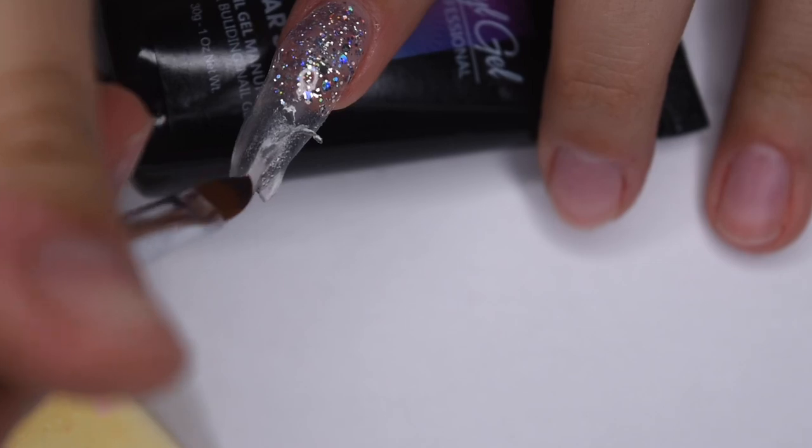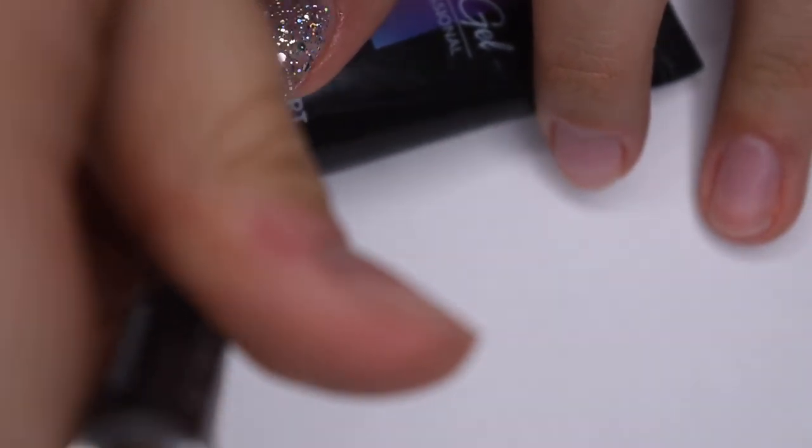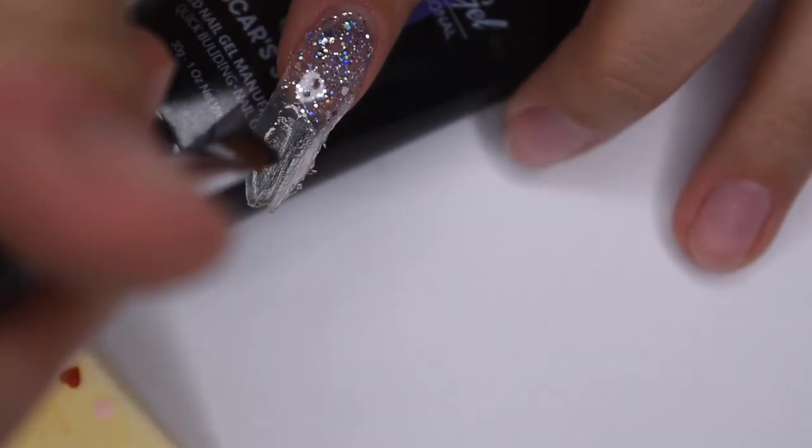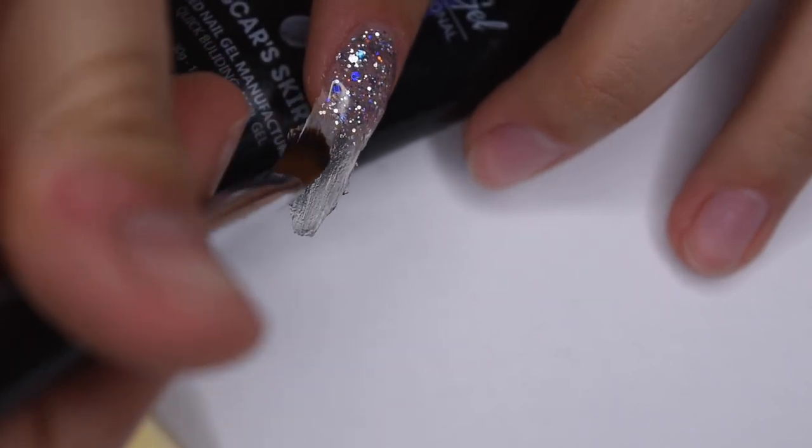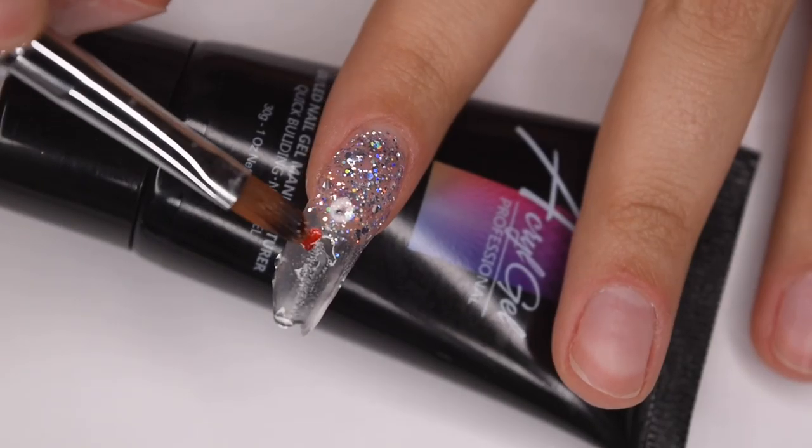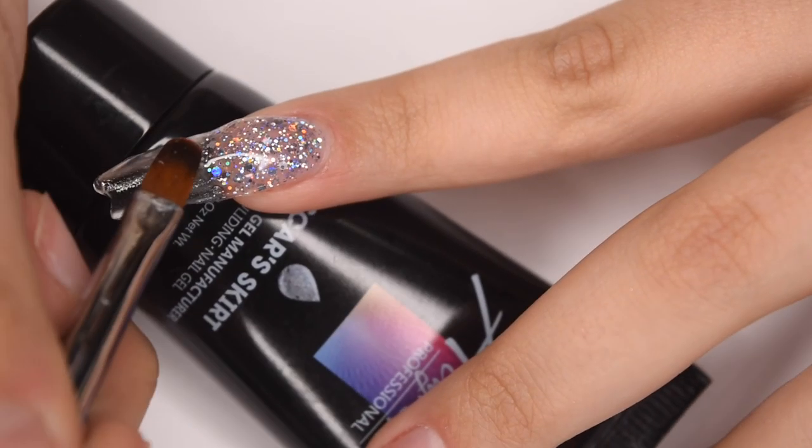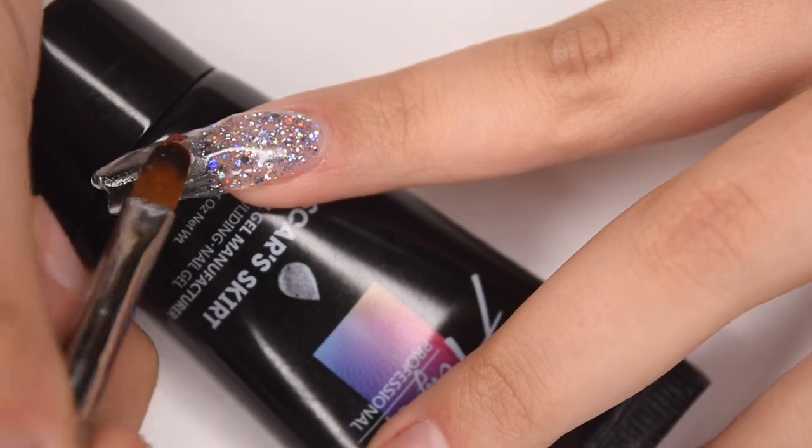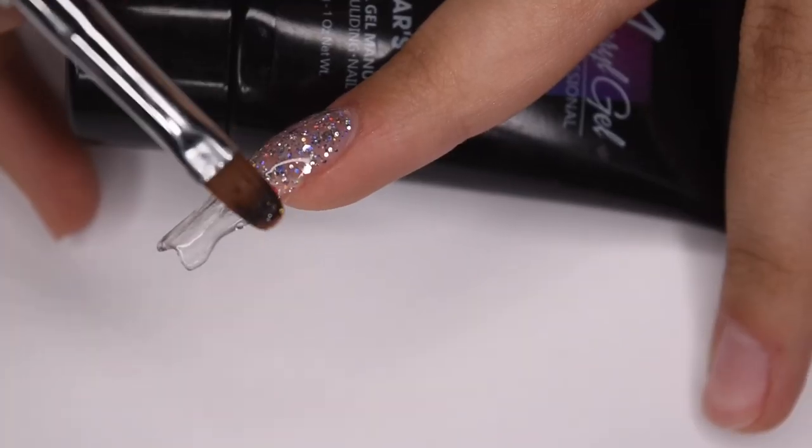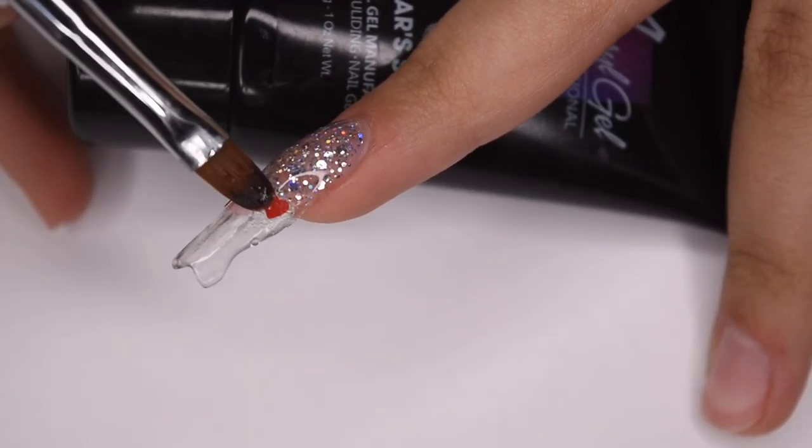And now I'm taking a super small amount of clear and very thinly spreading that on the rest of the remaining clear area. And this will help the heart sequins stick into place. And now I'm just taking those glitter pieces and placing them exactly where I want. And I think I did five or six hearts randomly placed to get a really cool effect. And I'm alternating between the pink and red colors as well.